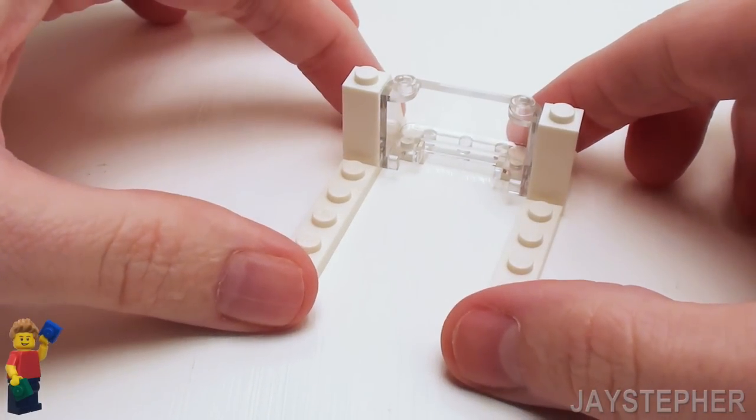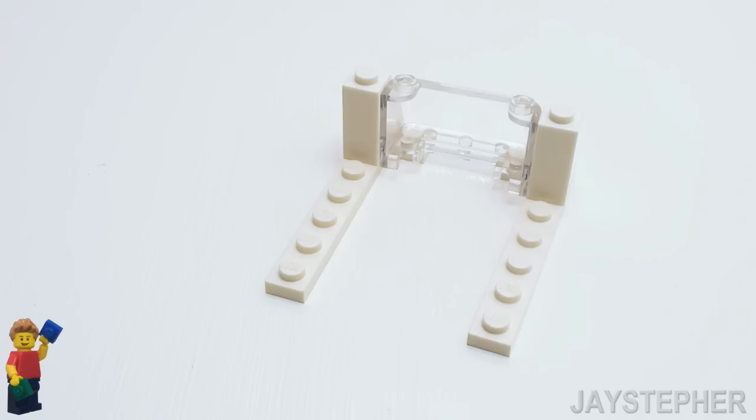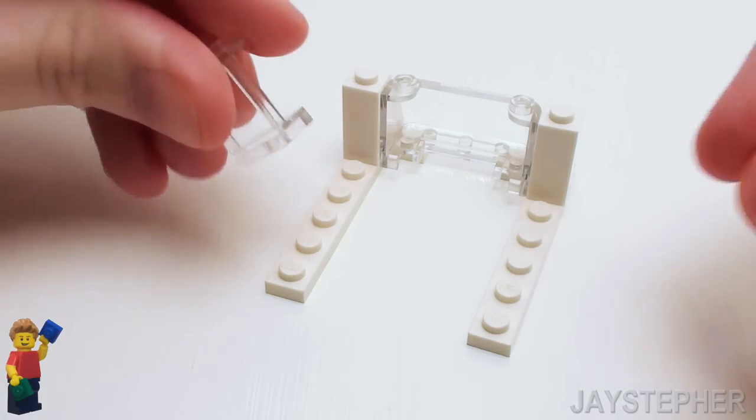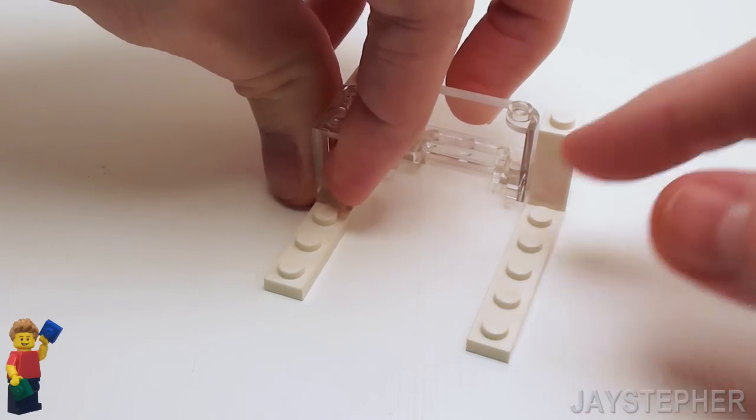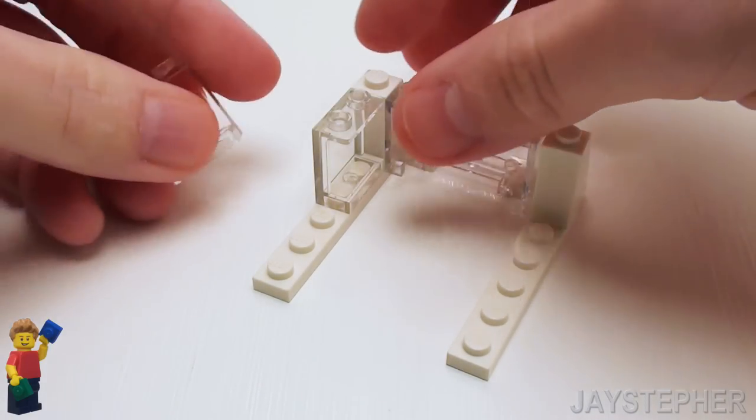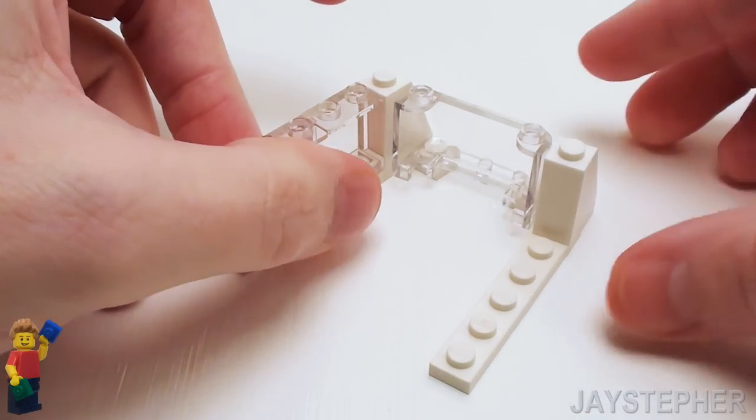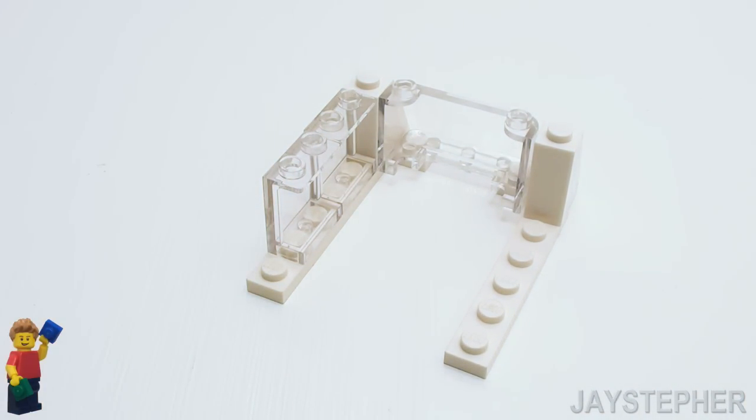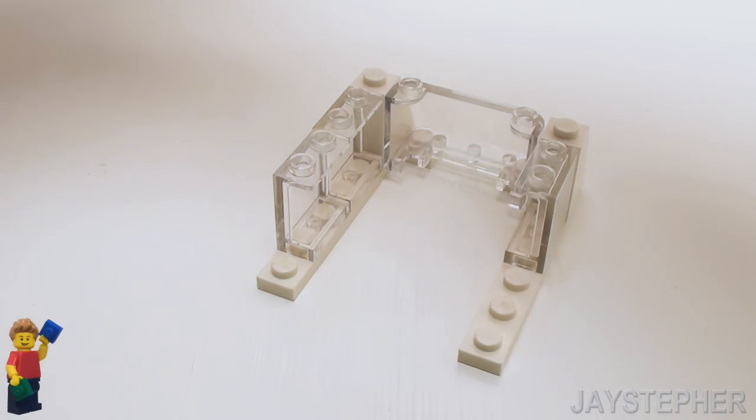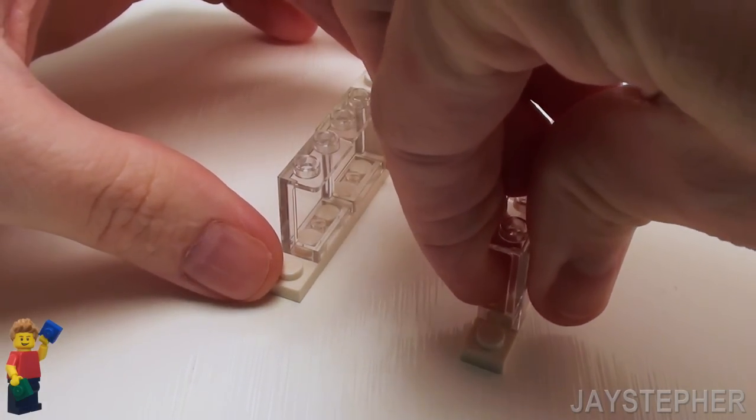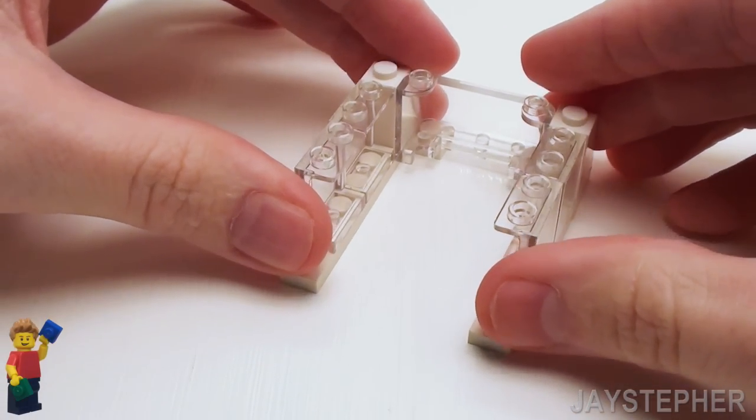Now I want to put some side windows. So we're going to take 2 1 by 2 by 2 transparent clear wall elements. We're going to place 2 on the left and 2 on the right-hand side. Now this thing is a bit fragile, so we're going to have to be very careful. We'll be locking it together very shortly.